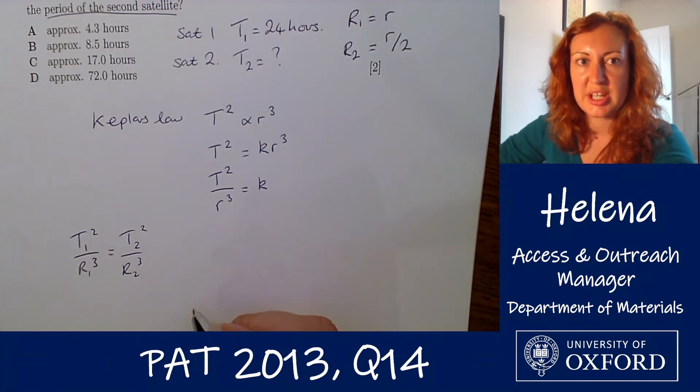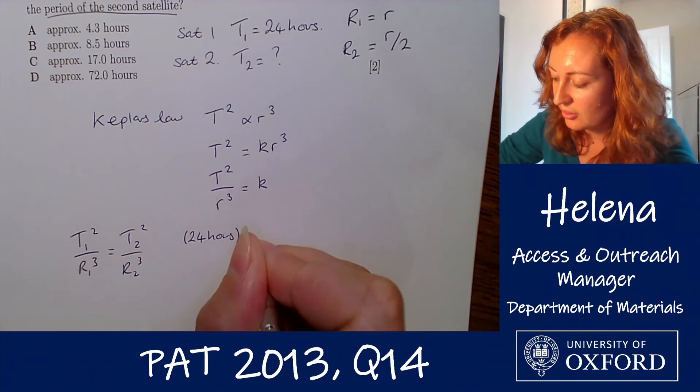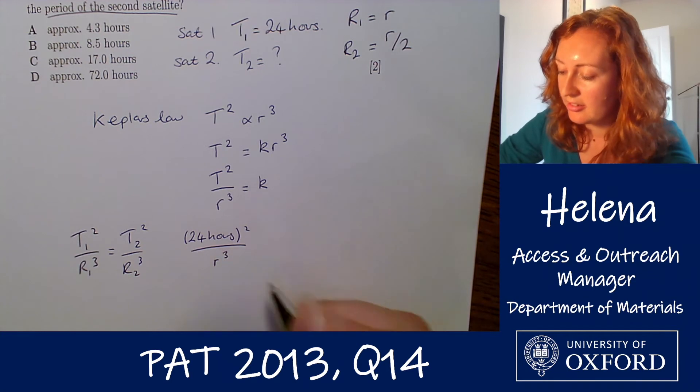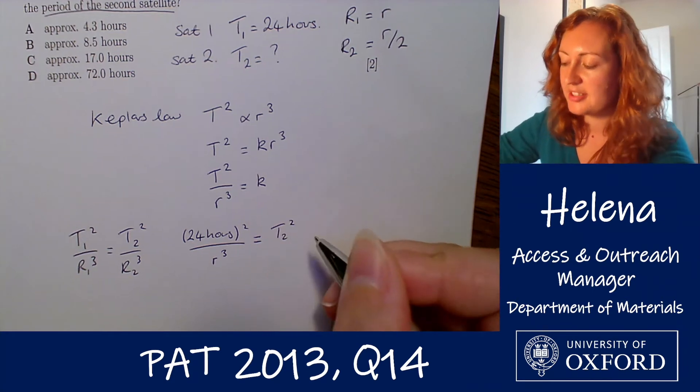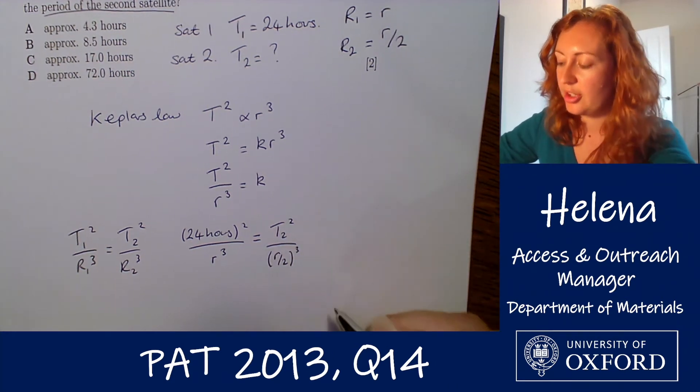So if we do that with our values here we have t1 is 24 hours all squared divided by r1 which is little r cubed and that is equal to t2 squared which is what we're trying to find divided by r over 2 all cubed here.